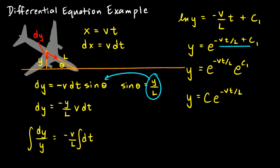And we can figure out what this constant is. It turns out to be pretty easy and intuitive. We just say that at time 0, the equation will look like this: y will equal c times e to the 0. And e to the 0 is just 1 because anything to the 0 is 1. So, at time 0, y is equal to c. So, that means c is the initial y position. So, c is equal to the initial y value. So, here's our equation: y is equal to y0 times e to the negative vt over l.